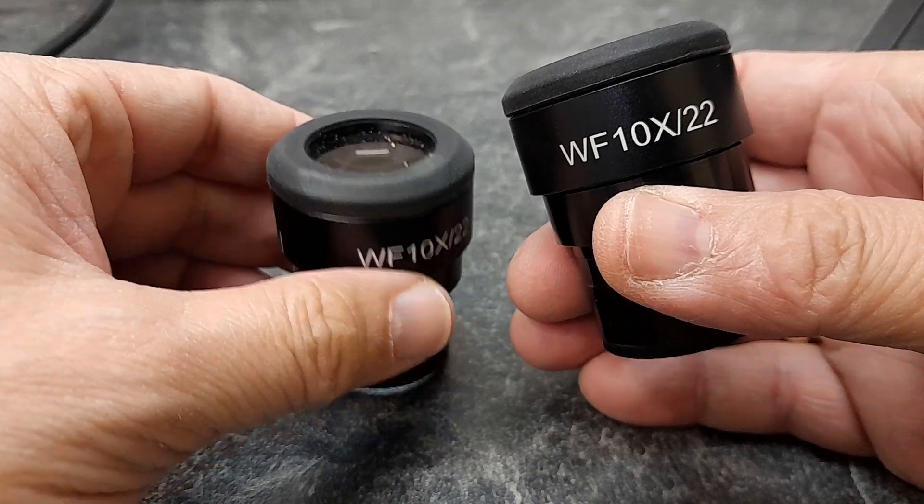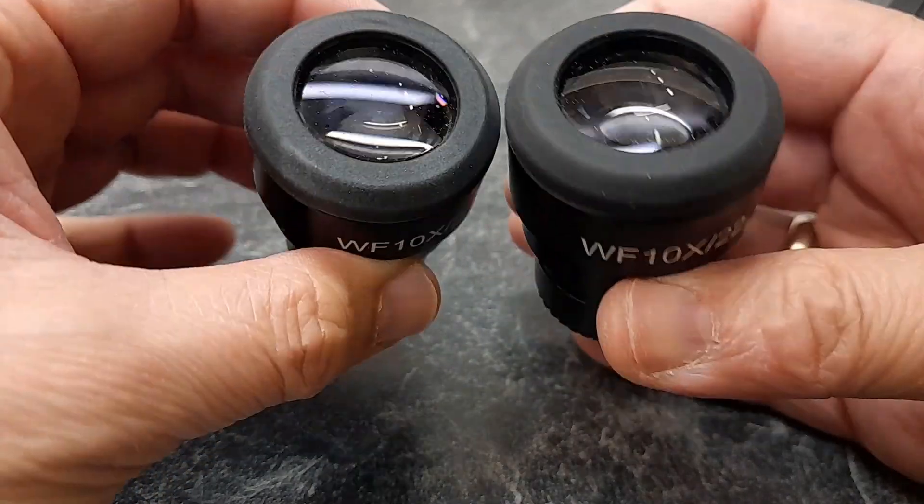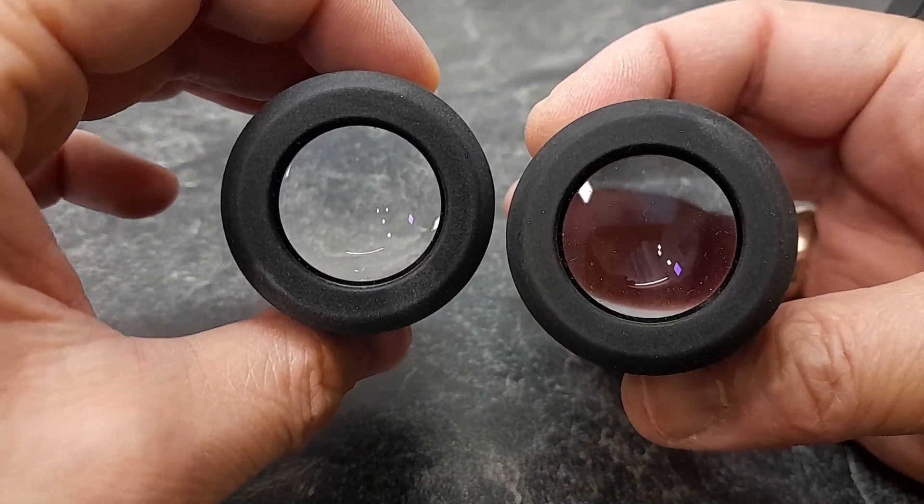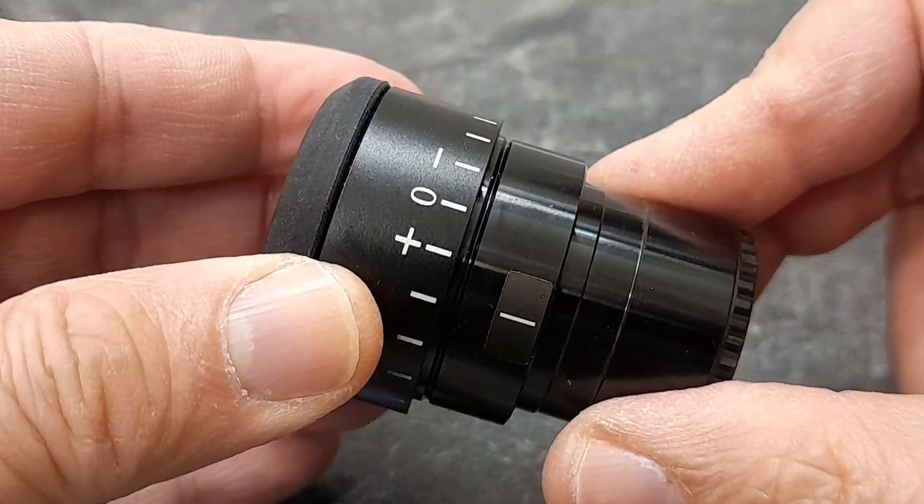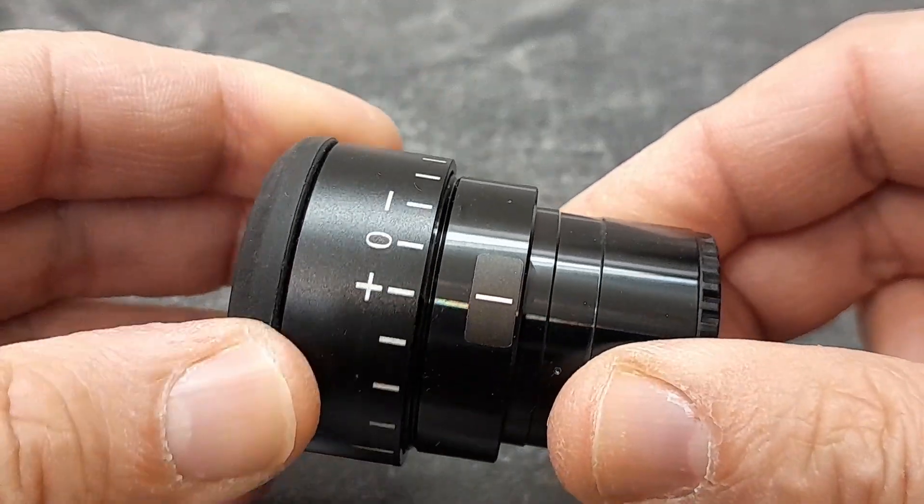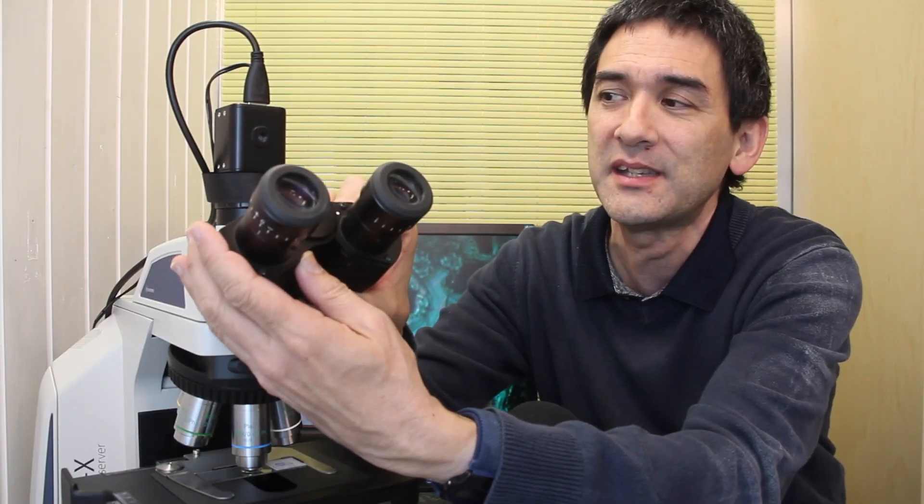Now let's move on the eyepieces of course the field number is 22 so these are wide field eyepieces. Yes of course each eyepiece can be adjusted has a diopter adjustment so if your two eyes are different then you can adjust each one of them separately. You can also adjust the distance of the eyepiece. You're even able to move it all the way up if you need an increased height so you see that it's quite nice in that sense.